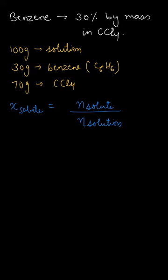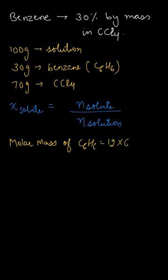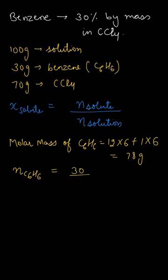We will calculate the number of moles for each of benzene and carbon tetrachloride. The molar mass of benzene, C6H6, would be equal to 12 into 6, because 12 is the atomic mass of carbon, plus 1 into 6, because 1 is the atomic mass of hydrogen. So that would be 72 plus 6, that is 78 grams. Now we can calculate the number of moles of benzene, C6H6. The number of moles is given by the given mass, that is 30 grams, divided by the molar mass, which is 78.